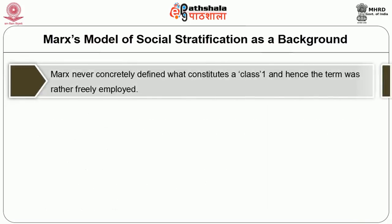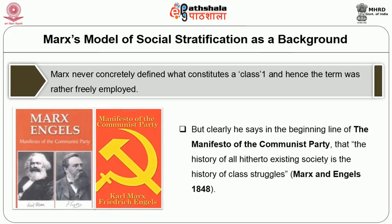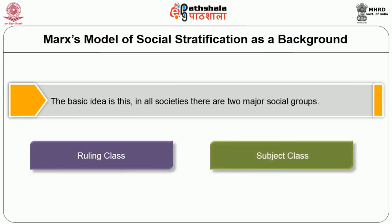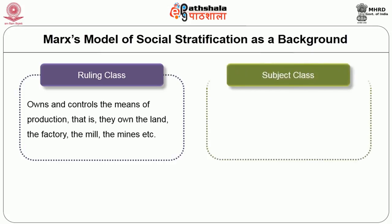Marx never concretely defined what constitutes a class, and hence the term was rather freely employed. But clearly, he says in the opening line of the Communist Manifesto that the history of all hitherto existing society is the history of class struggle. The basic idea is that all societies have two major social groups: a ruling class and a subject class. The ruling class owns and controls the means of production — the land, the factory, the mills, the mines — whereas the subject class provides the labour to make their ends meet.